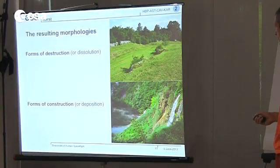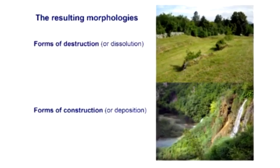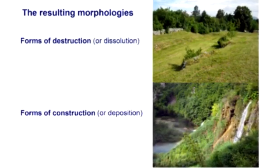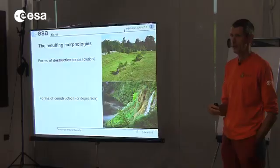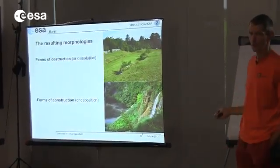One of the things we have to say — you saw it already in the reaction — is that we can have forms of destruction, where water is dissolving and taking away the rock. And you have forms of construction, because in certain places the CO2 can escape from the water, so calcium carbonate comes out of the water and becomes rock again. That's construction — that's these waterfalls, for example, the travertine.